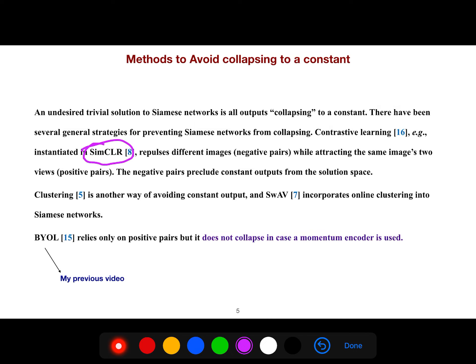Clustering is another way of avoiding constant output, and SwAV incorporates online clustering into Siamese networks. In my previous lecture, I introduced BYOL.